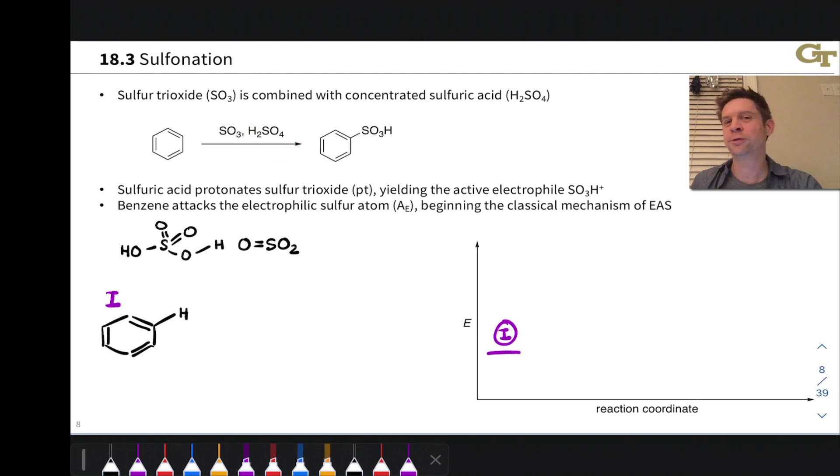SO3 is a pretty good electrophile in its own right, with sulfur linked to three electronegative oxygen atoms, but it's not good enough to react with benzene on its own. It needs a kick in the pants from the very strong acid H2SO4 in order to react.